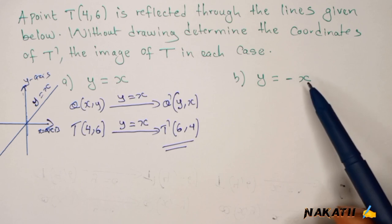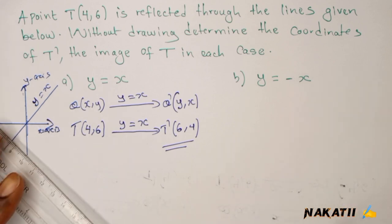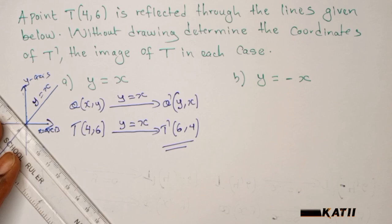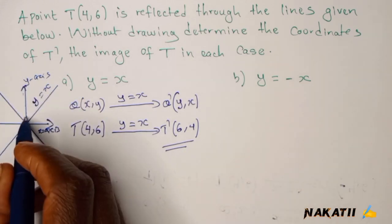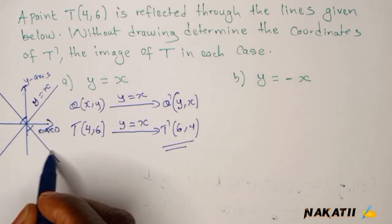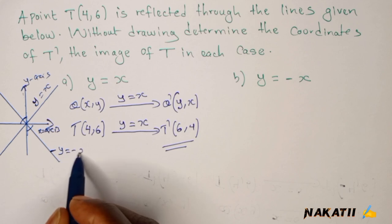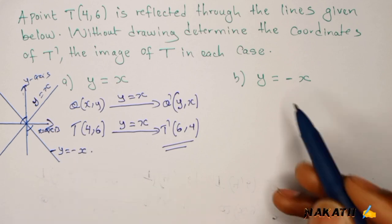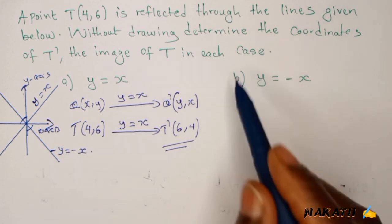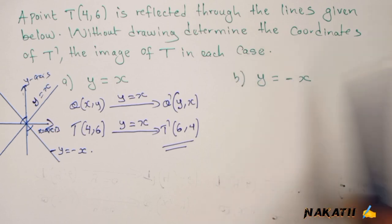For this one here, we are told to reflect on the line y equals negative x. On our Cartesian plane here, let me show you where that line is, line y equals negative x.